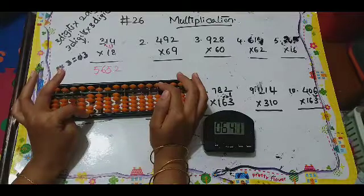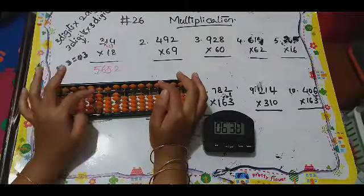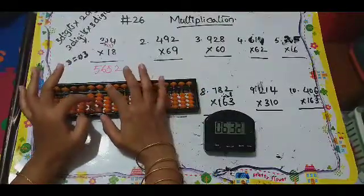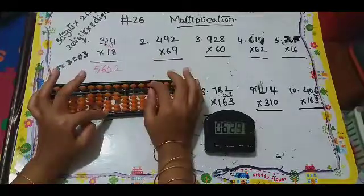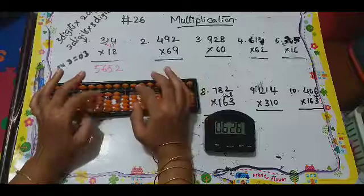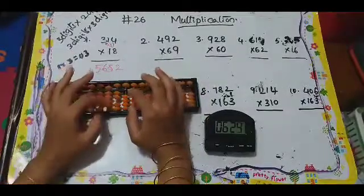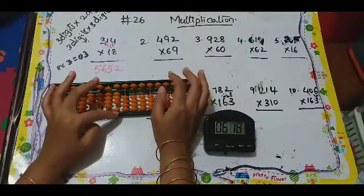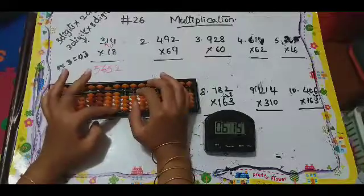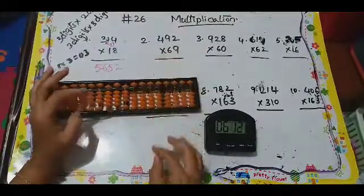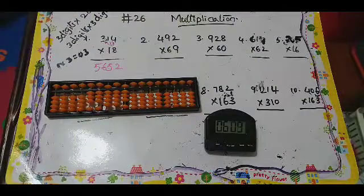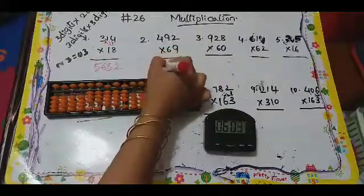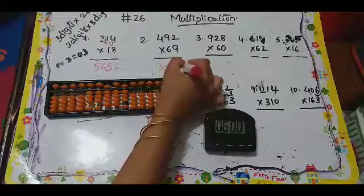Nine fours are 36, so I need to add 36. Next, nine nines are 81 — so 81. Next, nine twos are 18: one eight. So the answer is 33,948.